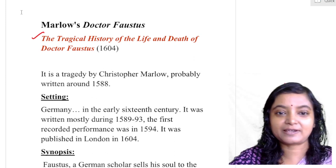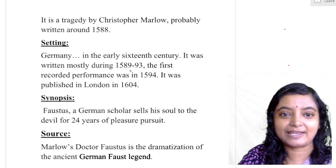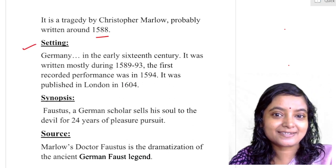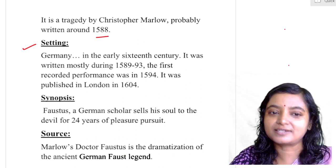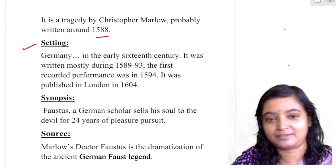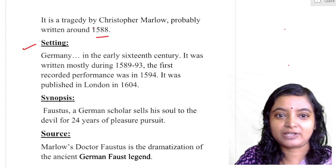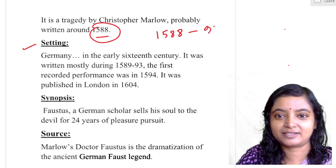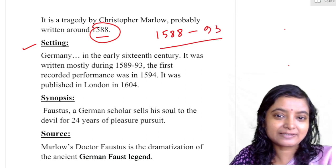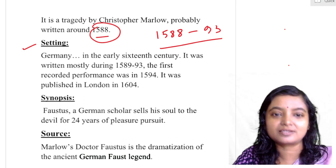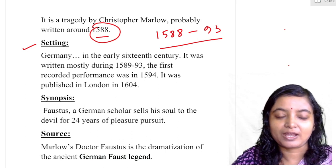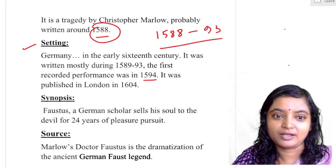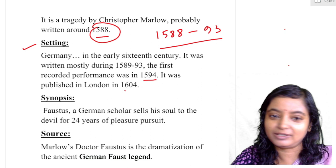It is a tragedy by Christopher Marlowe, probably written around 1588, in the early 16th century. It was written mostly during 1589 or 1593 — actually between 1588 to 1593, approximately during this phase, Marlowe wrote this. Its first recorded performance was in 1594, and it was published in London in 1604.